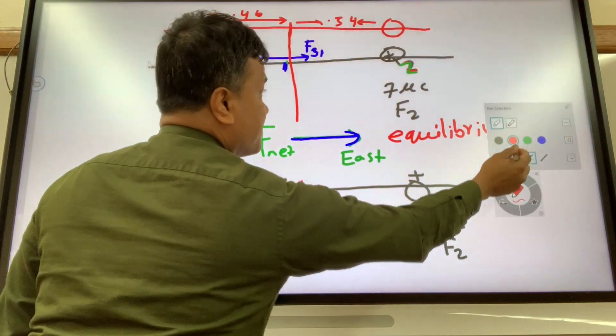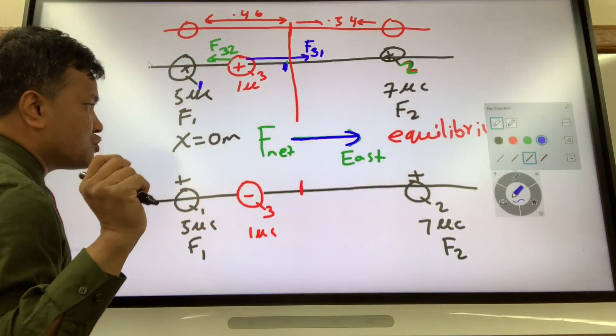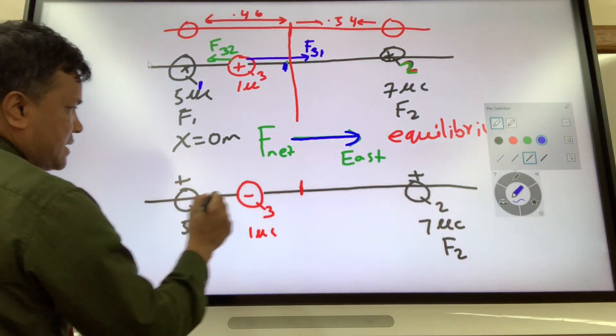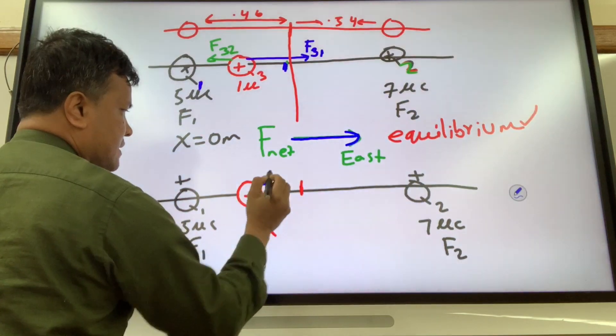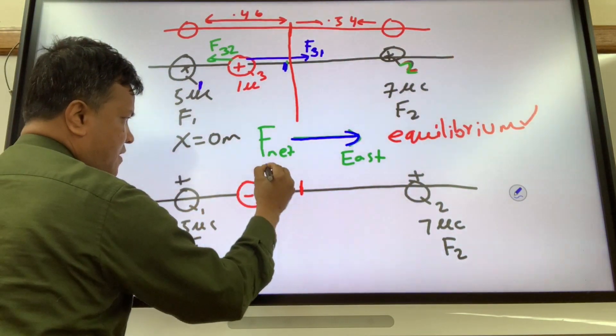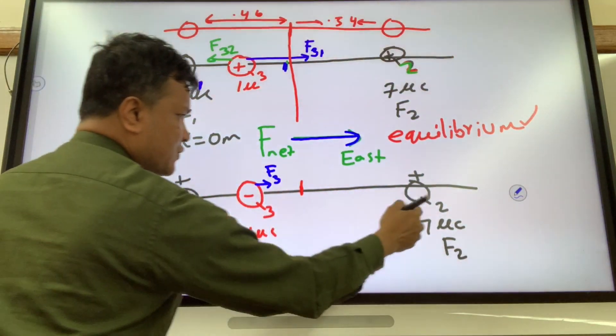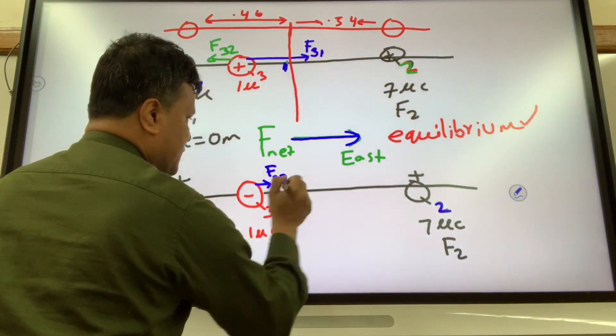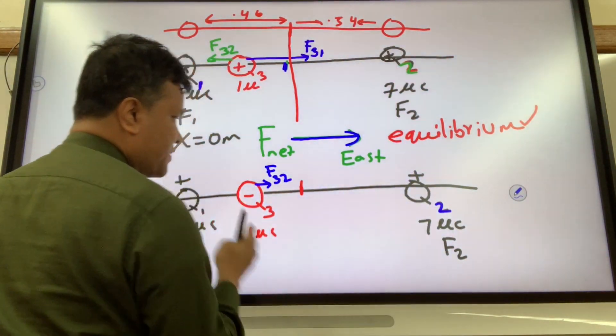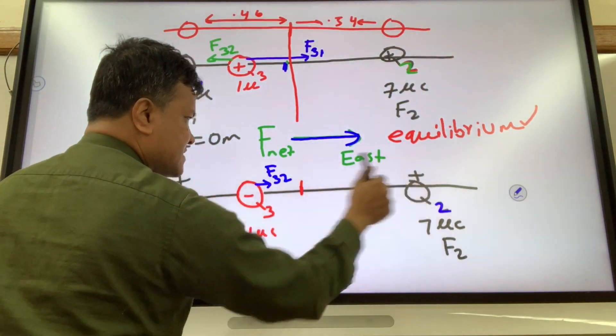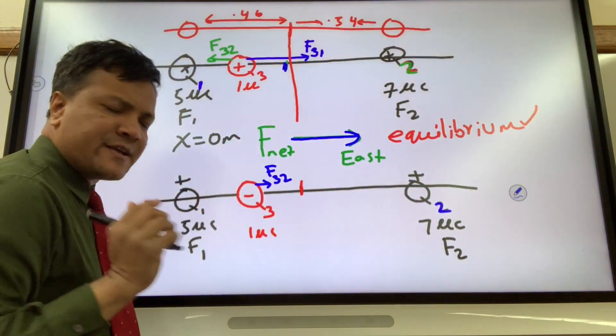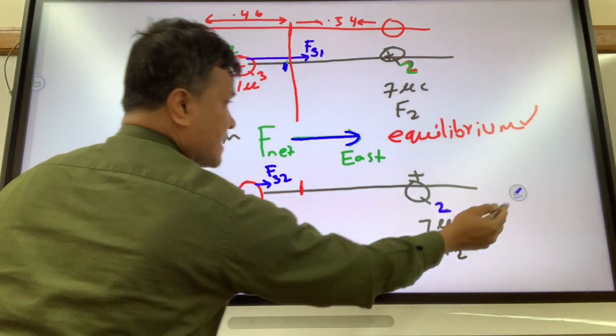To do that, we have to put the full free body diagram. Now this one is the force on 3 due to 2. Because this is negative and this is positive, they attract each other. And since there is greater distance, the force is less. Now let's see the other one.